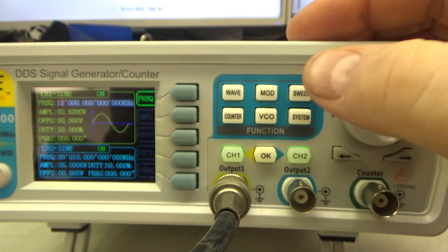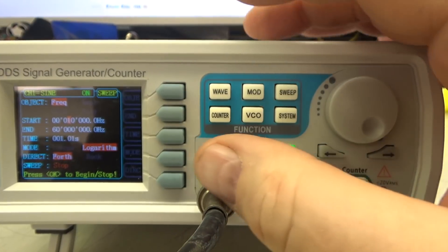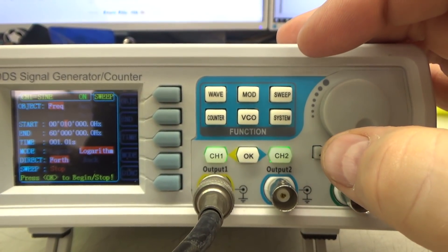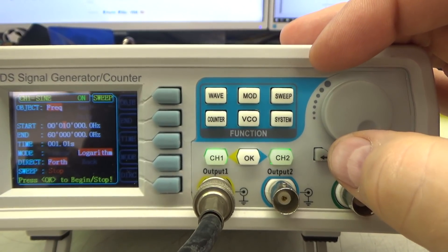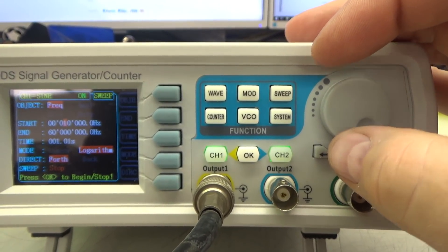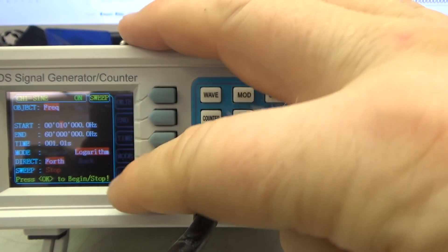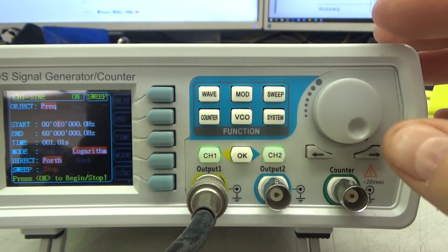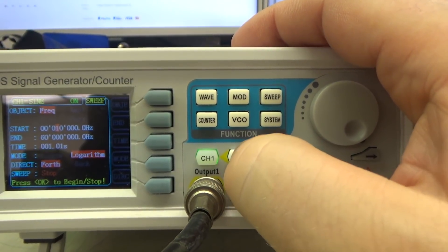It also supports a sweep function. And you can pick the start frequency and the stop frequency. Right now it is going from 10 kHz to 60 MHz with a transition time of 1 second. You can do it logarithmic or linearly. And the OK button starts and stops.